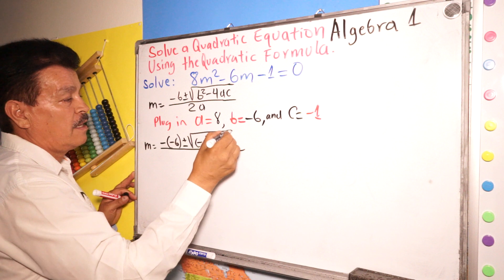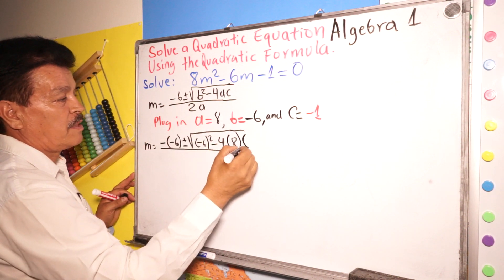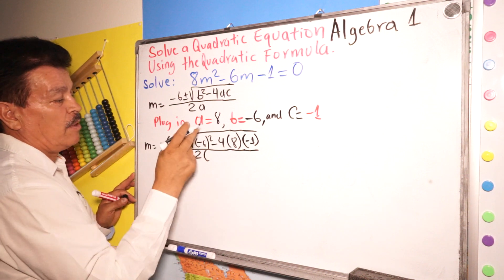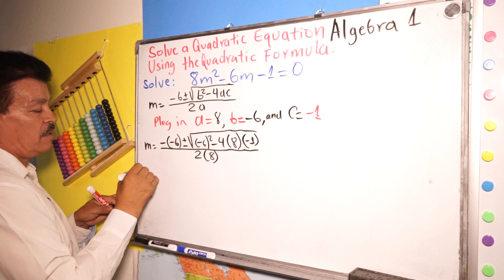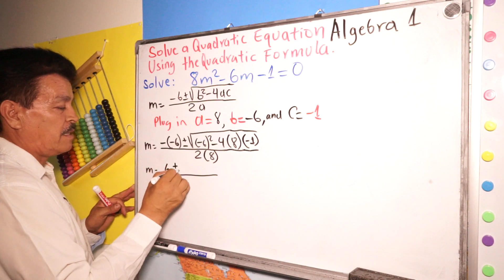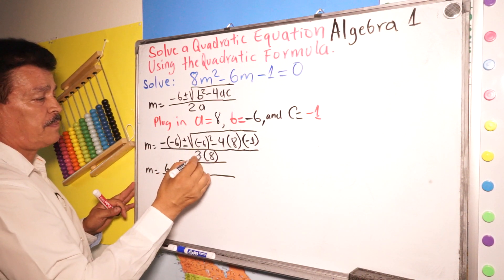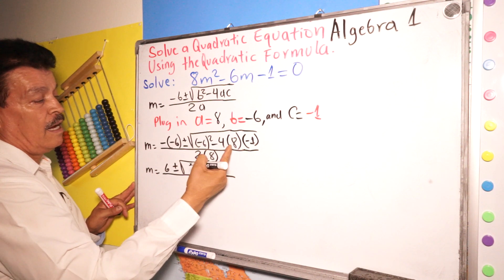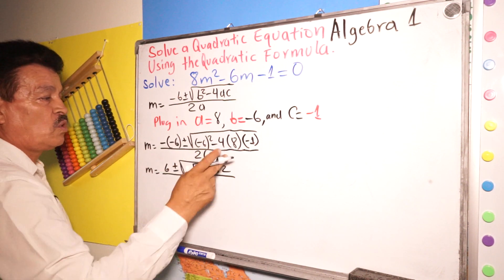Negative 6 squared, minus 4 times 8, times c which is negative 1, divided by 2 times 8. Now multiply and simplify all those numbers. You will have 6 plus or minus the square root of those numbers.